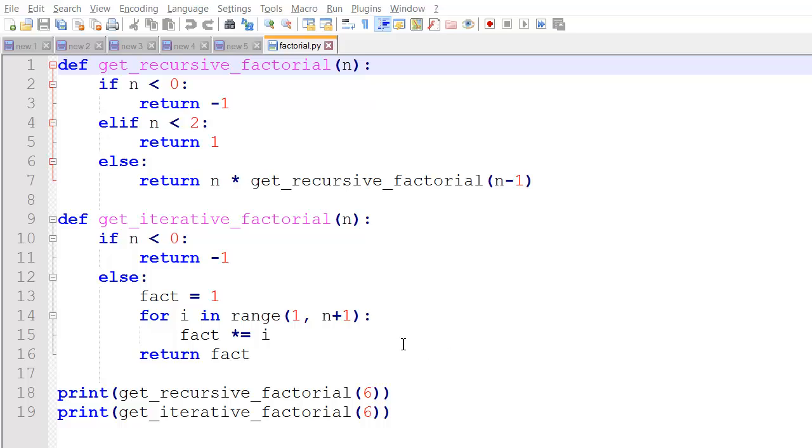So let's take a look at the Python code. I wrote two separate functions here: get recursive factorial, using the recursive method, and get iterative factorial, using the iterative or looping method. So first let's take a look at the get recursive factorial. It's going to accept an integer n. First I do a quick error check. If n is less than zero, I'll return negative one, just to indicate that there's an error and I can't find factorials for integers less than zero.